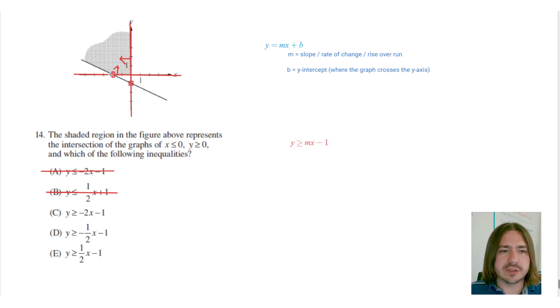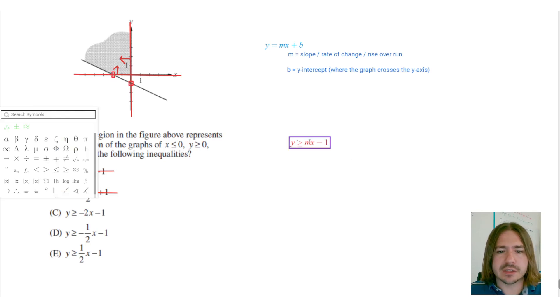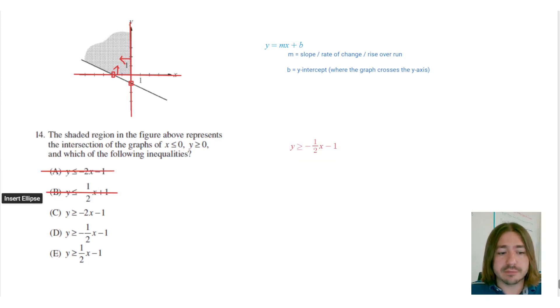So to figure out the slope or the rate of change, you just need to pick two points on the graph. I'll just pick these two intercepts - the x-intercept and the y-intercept - and you count your rise over run. So since I have to go down one, to the right two to get to the next point, my slope is going to be negative one half - down one over two.